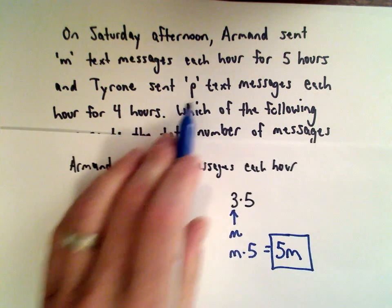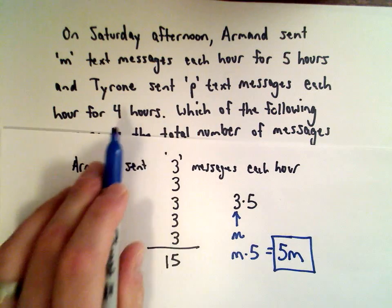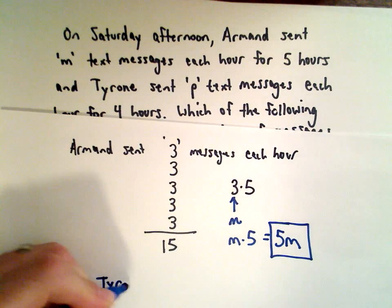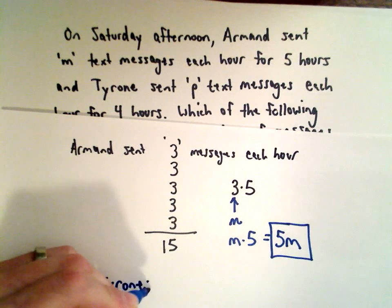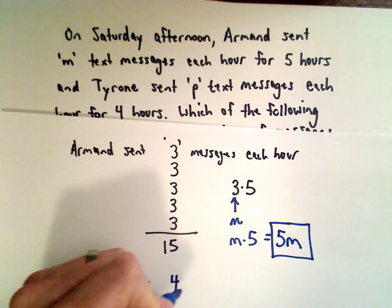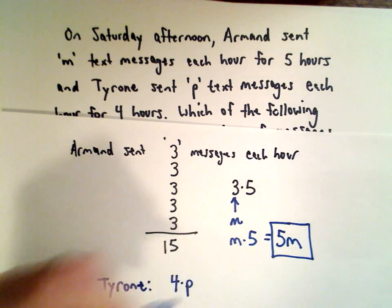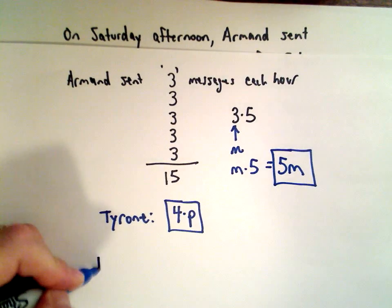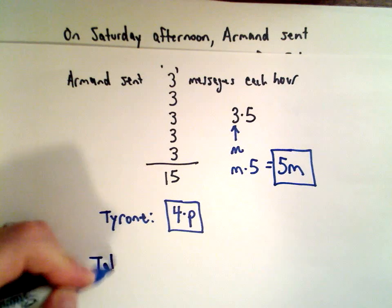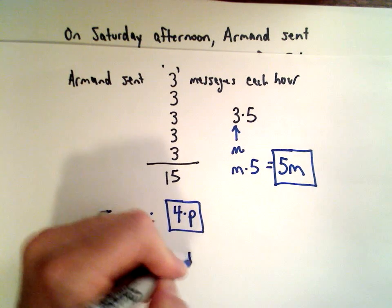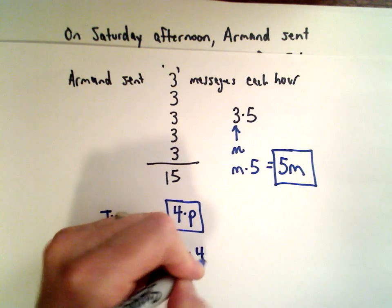And by the same reasoning, Tyrone sent P messages for 4 hours. So that means we would take 4 and multiply that by P to get the number of messages that Tyrone sent. So the total — we would just add those two values together — we would have 5M plus 4P.